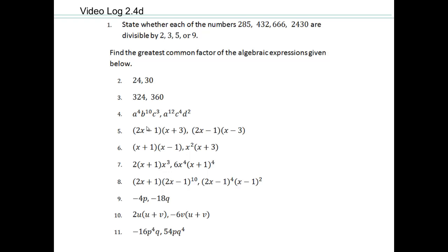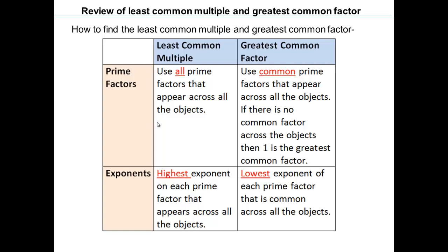Do these problems on your own. Let's review: for least common multiple, we use all the prime factors that appear across all objects and pick the highest exponent. For greatest common factor, we use only the prime factors that are common across all objects — and if there are none, then 1 is your GCF. For exponents: LCM uses the highest exponent, GCF uses the lowest exponent.